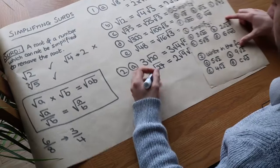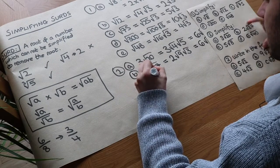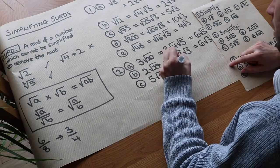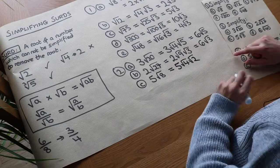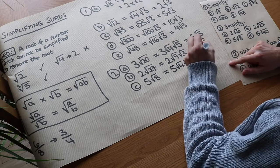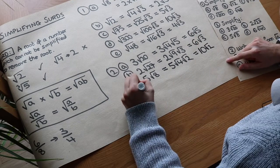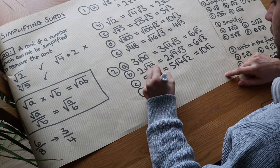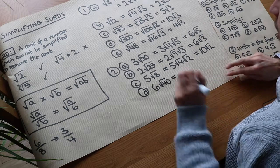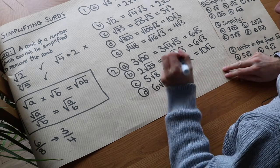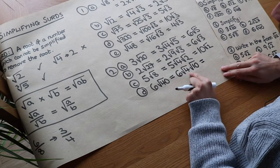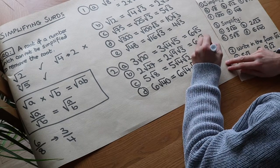What about 5 root 8? The biggest square factor that goes into 8 is 4, so it's 5 times root 4 times root 2. The square root of 4 is 2, and 2 times 5 is 10, so it's 10 root 2. Then for 6 root 40: the biggest square factor of 40 is 4, so we write 6 times root 4 times root 10. The square root of 4 is 2, and 2 times 6 is 12, so it's 12 root 10.